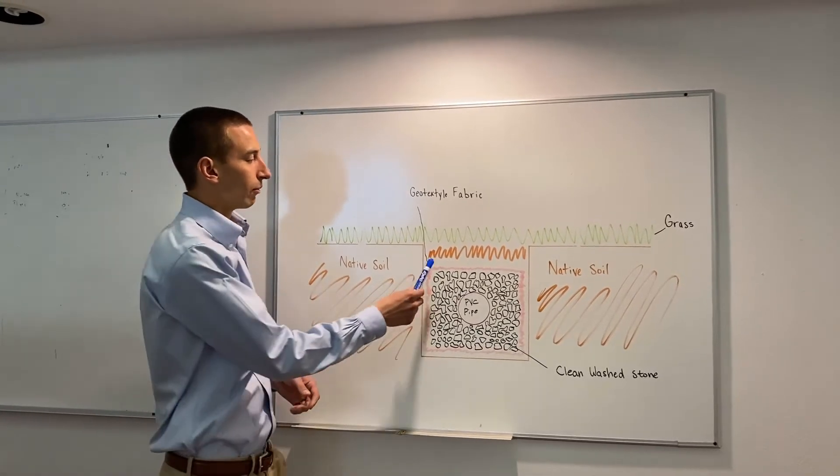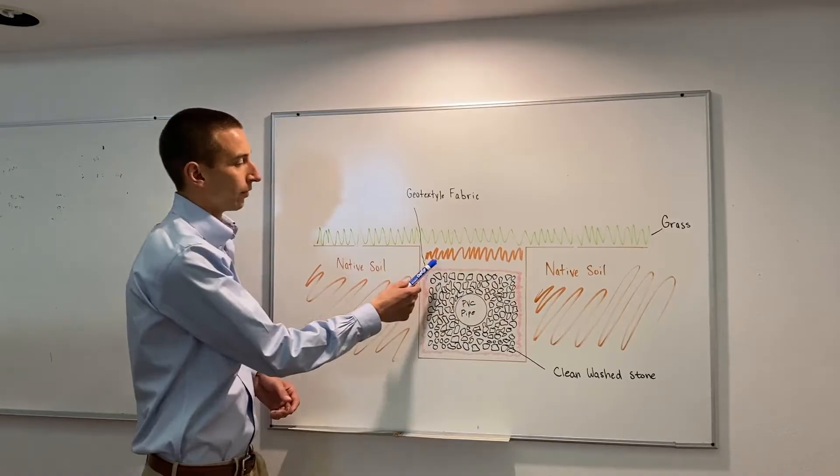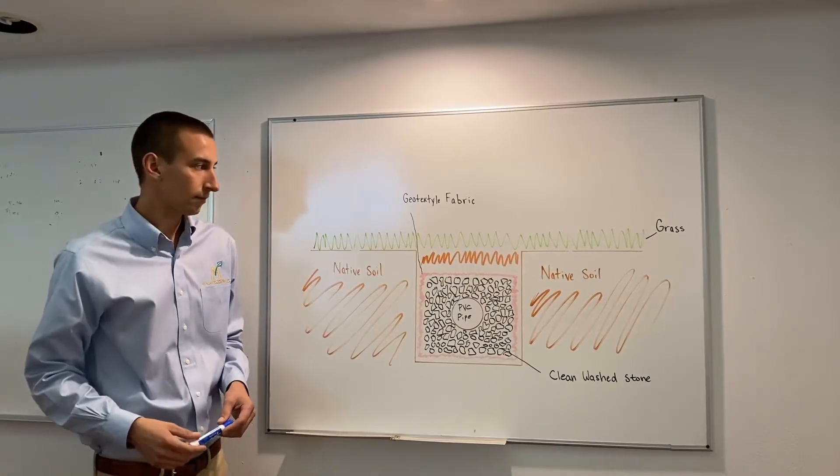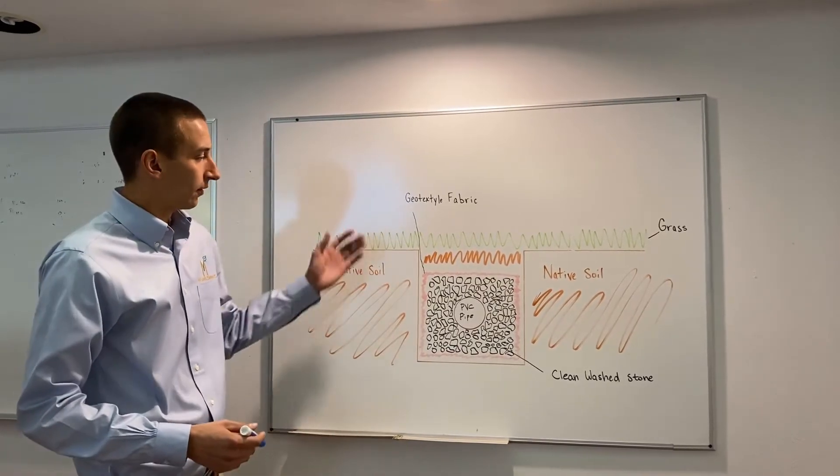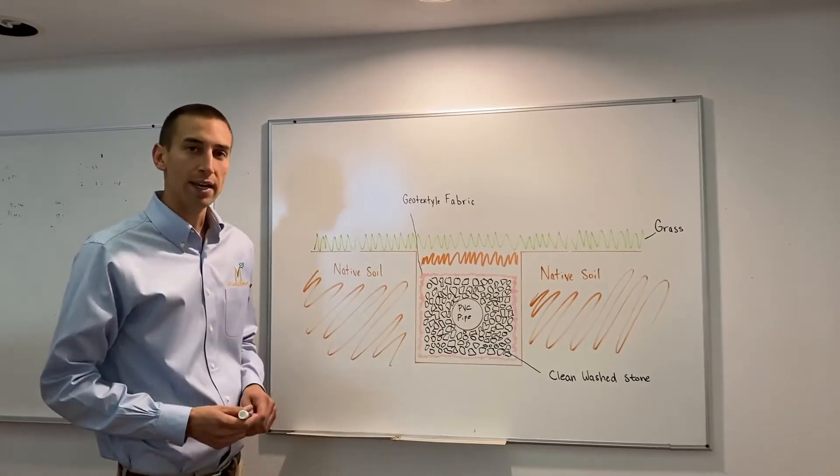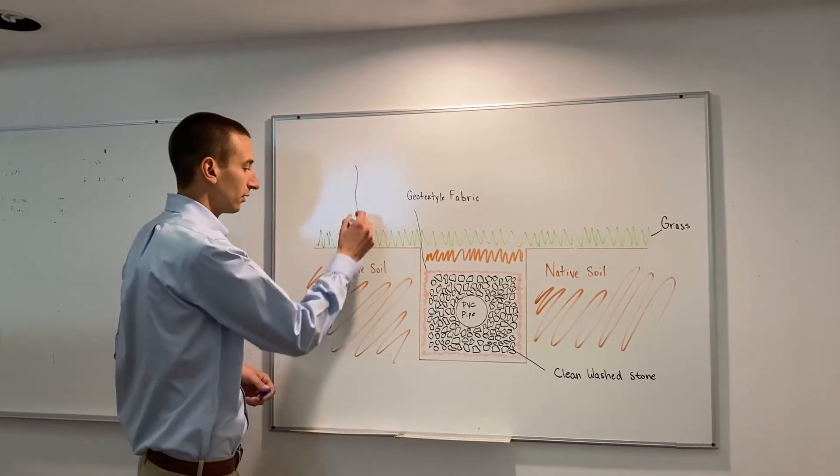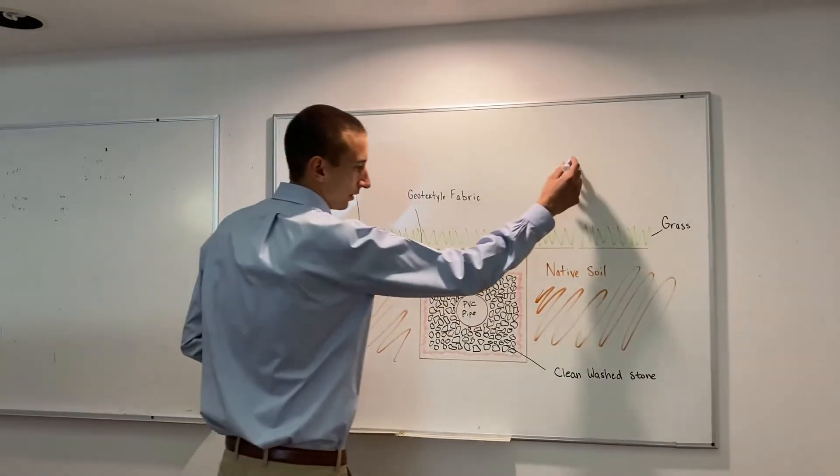Once that is completed, we will add more native soil to the top and then plant grass seed or sod. Now that the trench is completed, when it rains, the water will enter the soil as shown here.